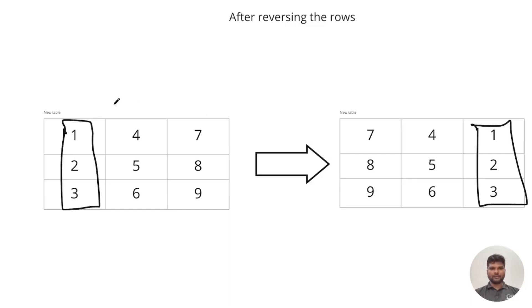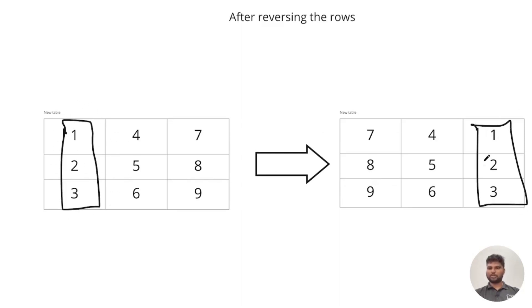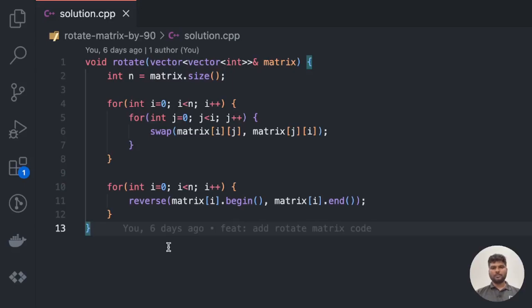After the first step, the first row became the first column, the second row became the second column, and the third row became the third column. But we want the first row to become the last column. So for that we reverse the rows: 1 5 4 7 becomes 7 4 1, 2 5 8 becomes 8 5 2, and 3 6 9 becomes 9 6 3. Reversing rows means we are changing the positions of the columns — the first column becomes the last column and vice versa.